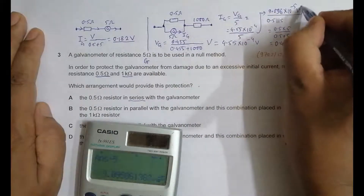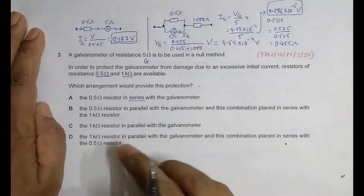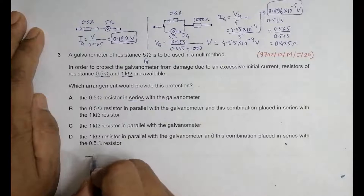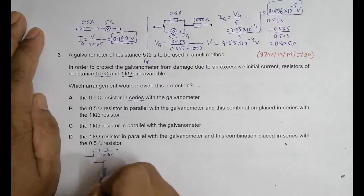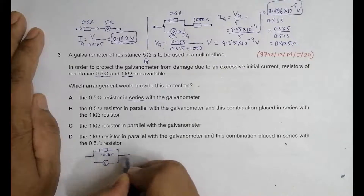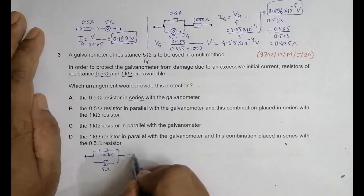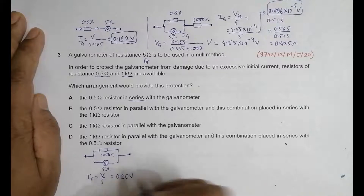In choice C, the 1 kilo-ohm resistor (1000 ohm) is in parallel with the galvanometer G (5 ohm). In this case, the current through the galvanometer equals V / 5 = 0.20V. So for choice C the galvanometer current is 0.20V.